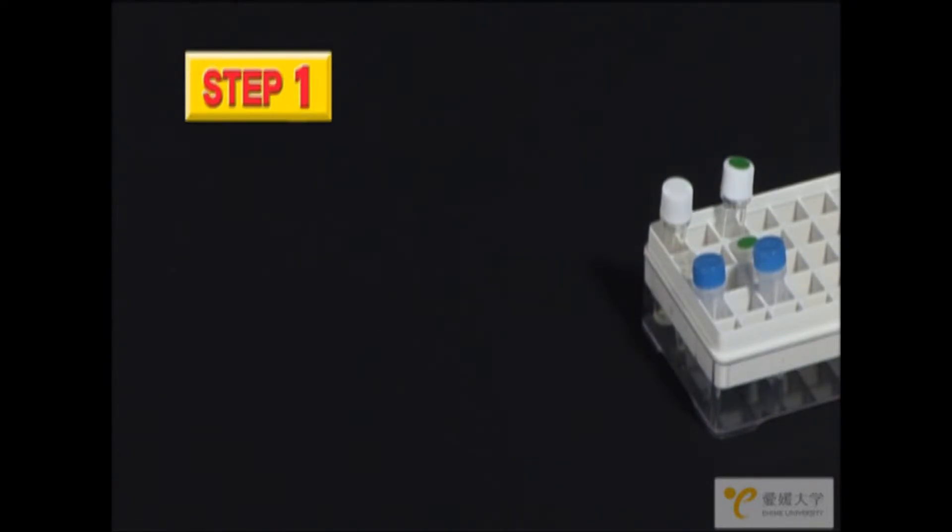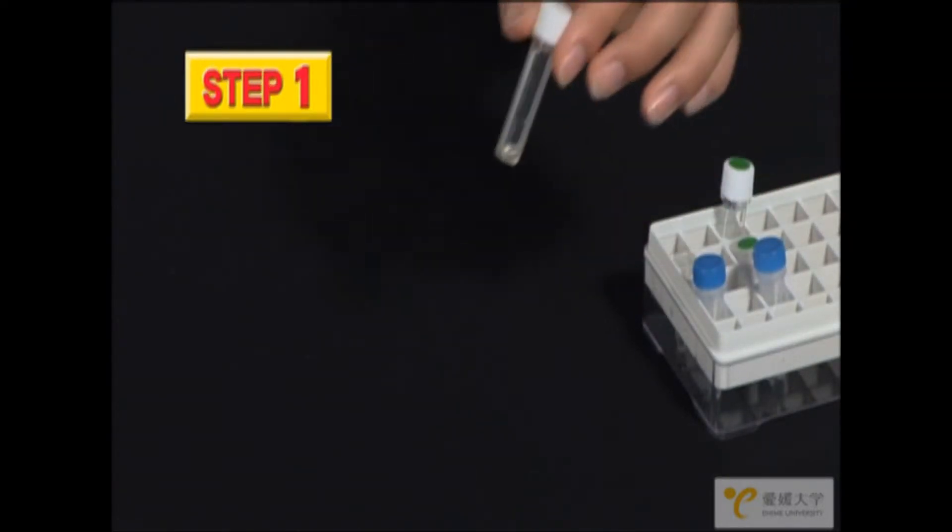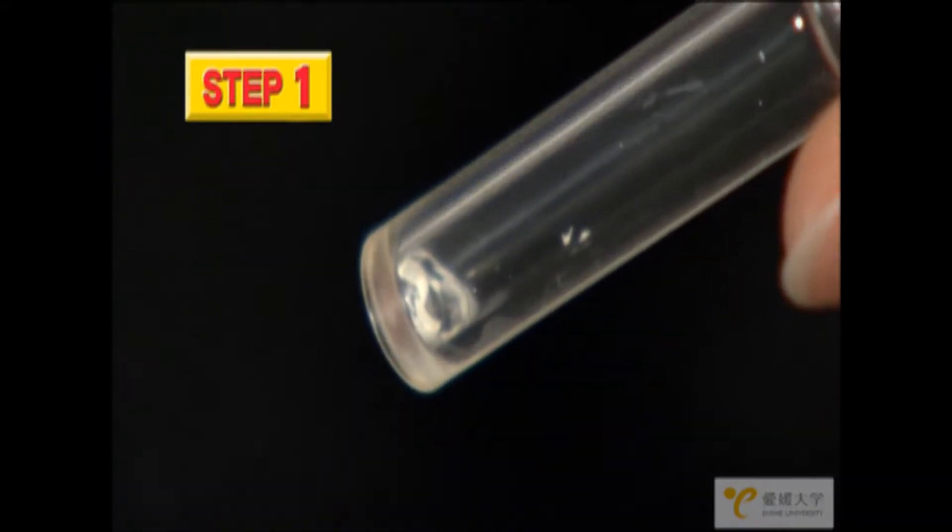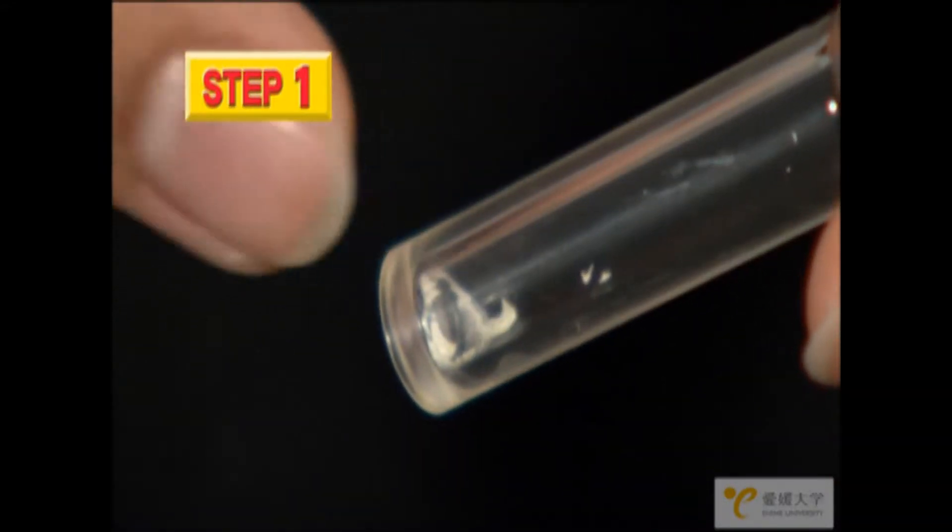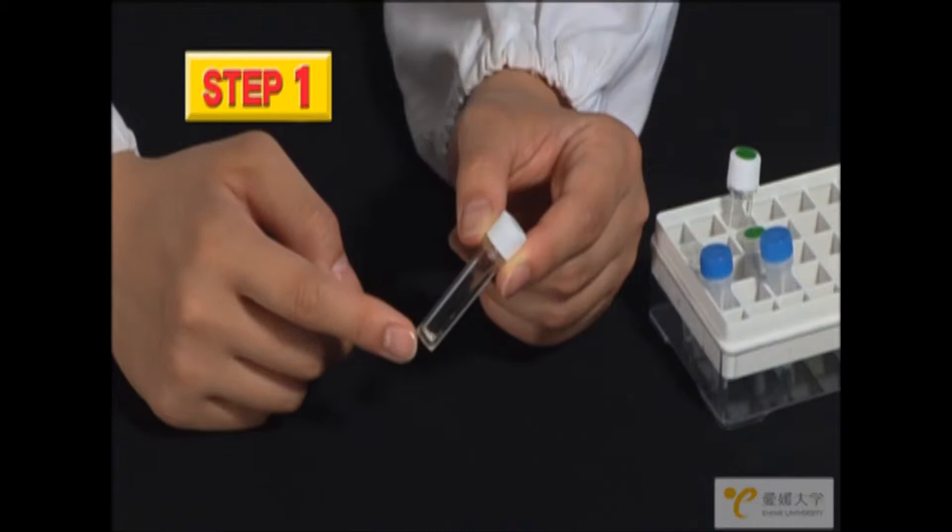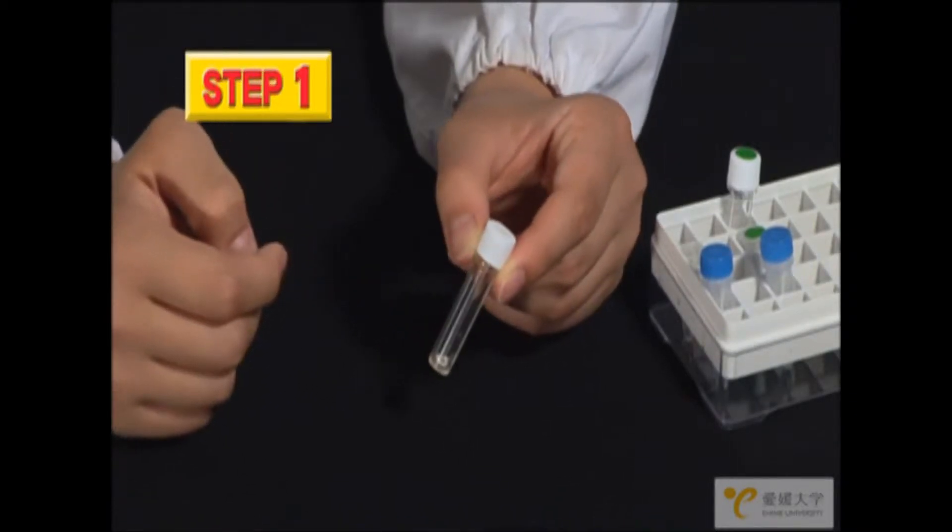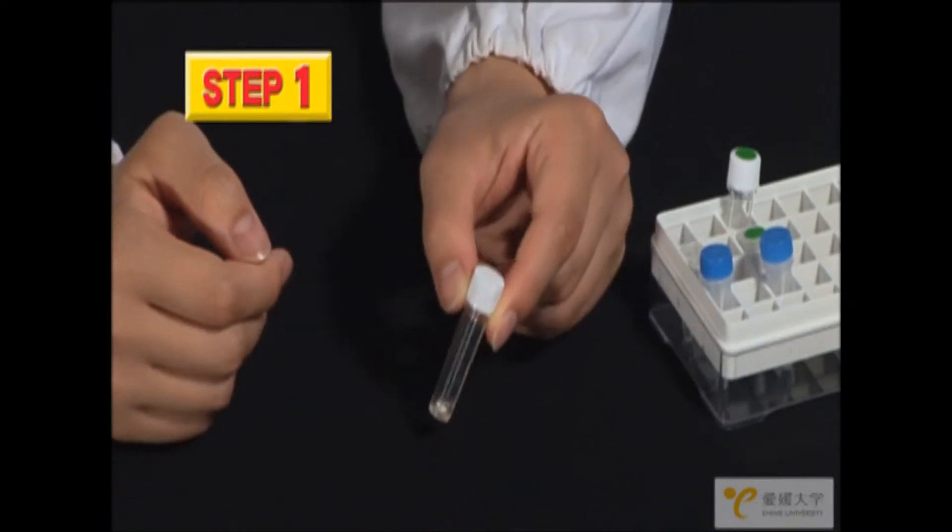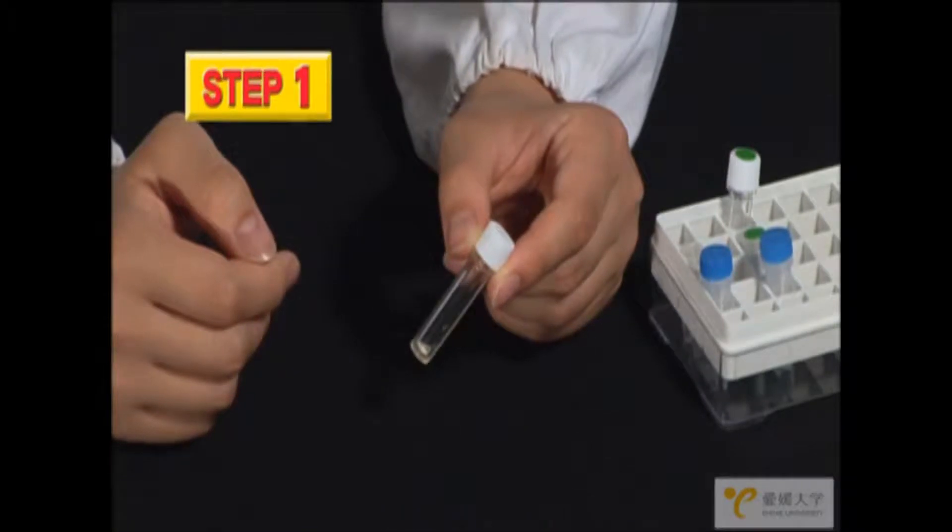Now we are ready to begin. Take the large tube without the green dot. Tap it so that the powder collects at the bottom. Then remove the cap.